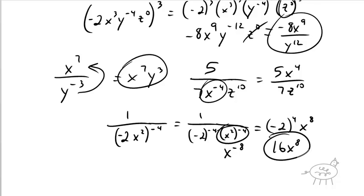Okay, that's it, math fans — 16 minutes of this lesson. Hopefully you guys are good to go with this. Remember: anything to the 0 power is 1, and anything with a negative exponent moves to the other side of the fraction. Alright, that's it, math fans. Have an outstanding day. Adios, goodbye.